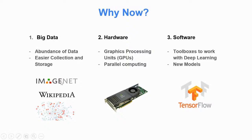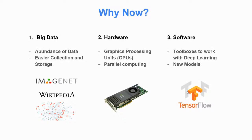ImageNet is a famous database where you can find many datasets to train your models. Social media, Wikipedia, and the use of graphics processing units — GPUs — have all contributed. And we now have modern tools to easily construct neural networks, such as TensorFlow, a free and open-source framework for deep learning and machine learning developed by Google, which has been one of the top frameworks in this area.